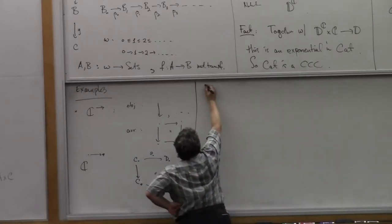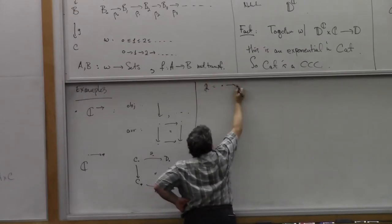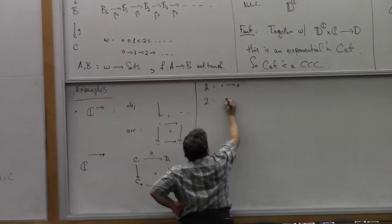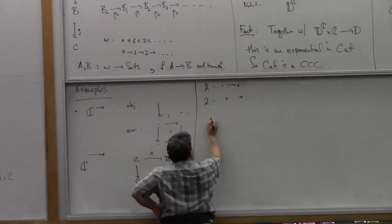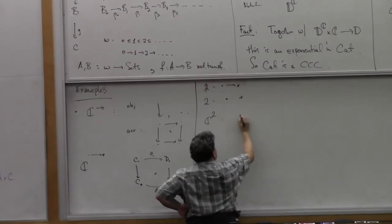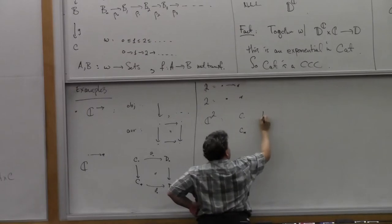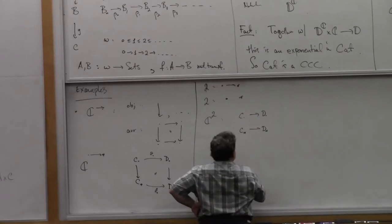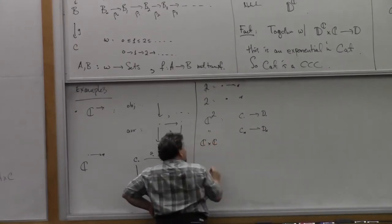What if we take the category with two objects but no arrow between them — call it 2? If I take C to the 2, the objects are just a pair of objects and the arrows are pairs of arrows with no compatibility condition. So that's exactly the same thing as C cross C. So we have the laws of exponents at work.